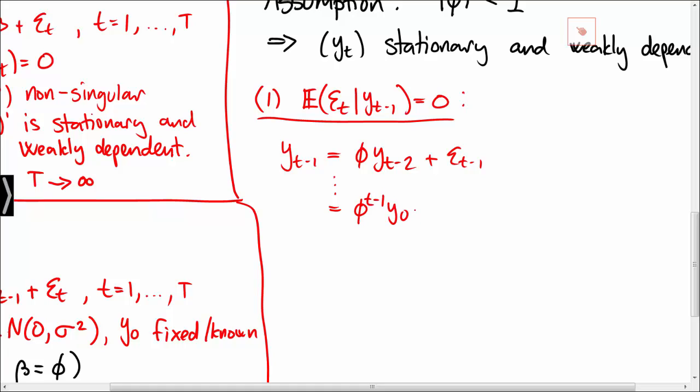This equals phi to the t minus 1 times y0 plus the sum from i equal to 1 to t minus 1 of phi to the i times epsilon t minus i. This is just a function of epsilon 1 up to epsilon t minus 1 and y0. This variable is by construction independent of epsilon t as we have assumed that the epsilons are independent over time.